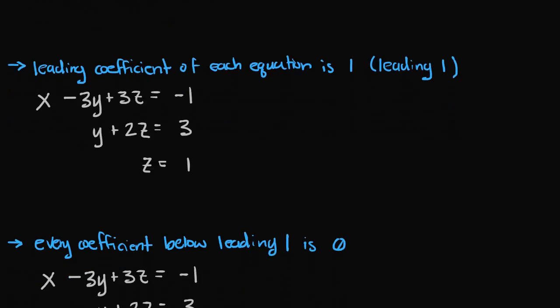The second rule is that the leading coefficient of each equation is 1, known as the leading 1. In the first equation, the x term has a coefficient of 1. In the second equation, the y term has a coefficient of 1. And in the third equation, the z term has a coefficient of 1. These are called leading 1s because they appear at the left-most side of each equation. Since each equation satisfies this, the system has met the second rule for row echelon form.